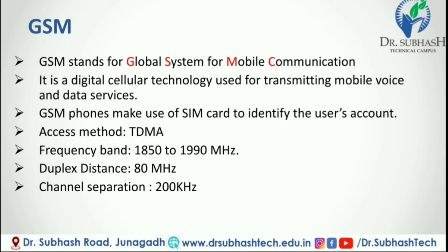Modulation is the process of sending a signal by changing the characteristics of a carrier frequency. This is done in GSM via Gaussian Minimum Shift Keying. Transmission rate in GSM is a digital system with an over-the-air bit rate of 270 Kbps. Access method: GSM utilizes the Time Division Multiple Access (TDMA) concept, a technique in which several different calls share the same carrier, with each call assigned a particular time slot. This covers the basics of GSM technology.